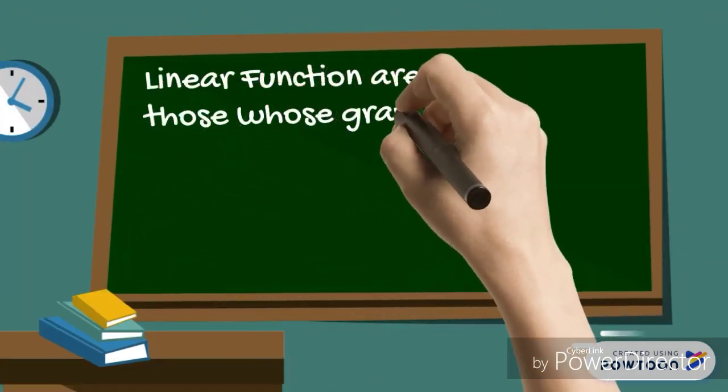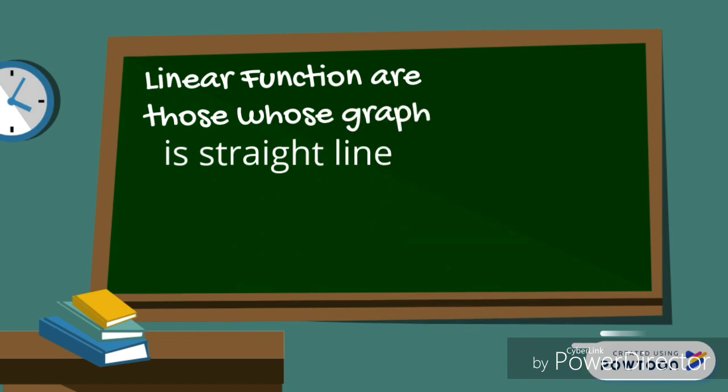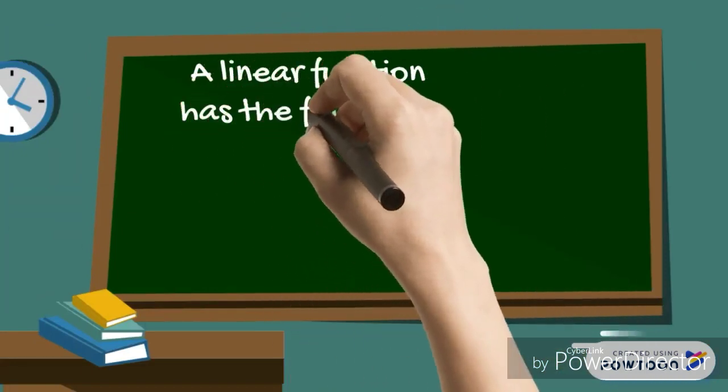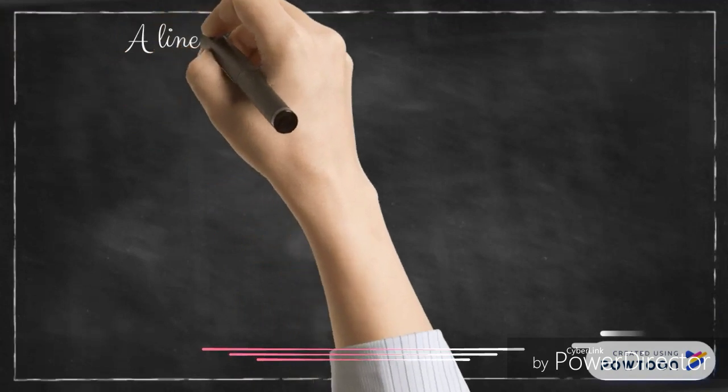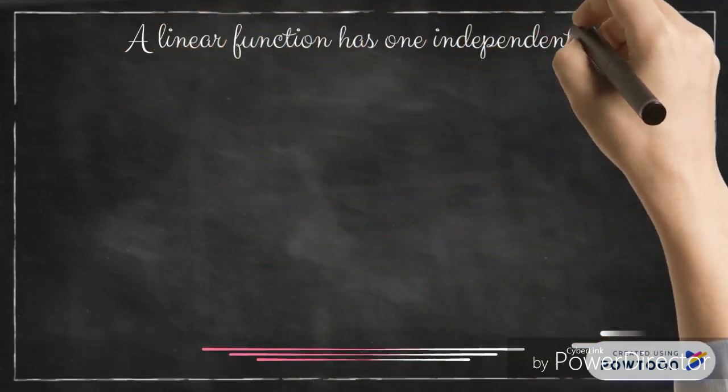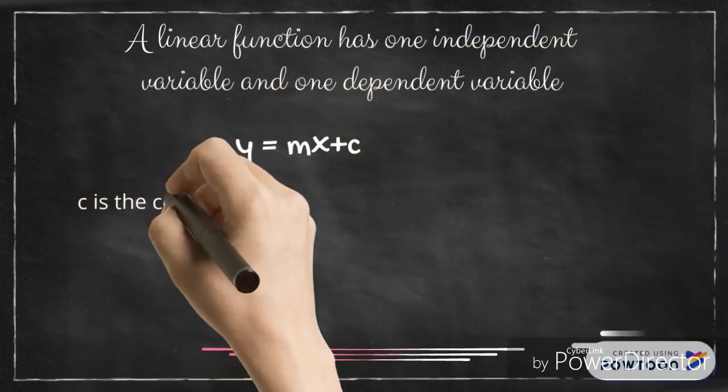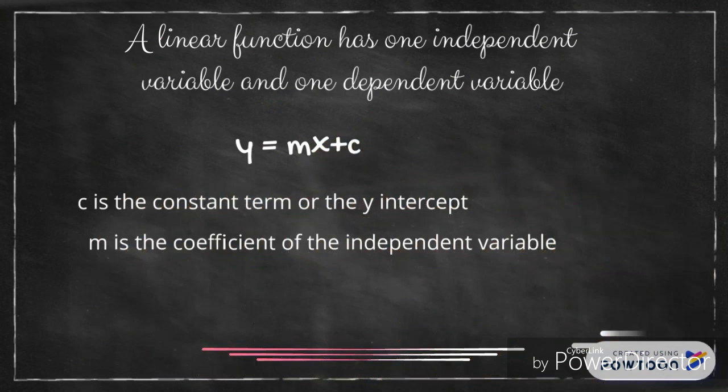Linear functions are those whose graph is a straight line. A linear function has one independent variable and one dependent variable. C is the constant term or the Y-intercept, and M is the coefficient of the independent variable.